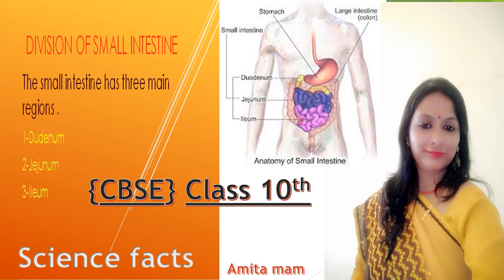Good morning children. Today's topic is division of the small intestine, taken from class 10 CBSE pattern. We will discuss the division of the small intestine. The small intestine has three main regions: duodenum, jejunum, and ileum. You can see this diagram on your screen — this is the stomach, and here are the three parts of the small intestine: duodenum, jejunum, and ileum.